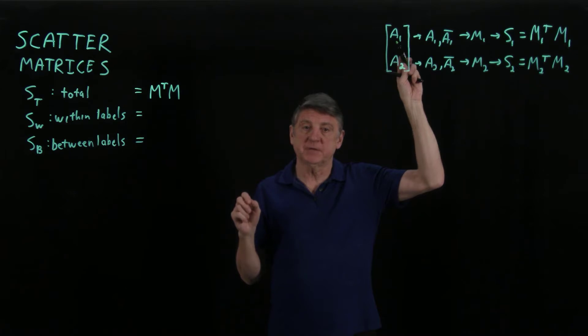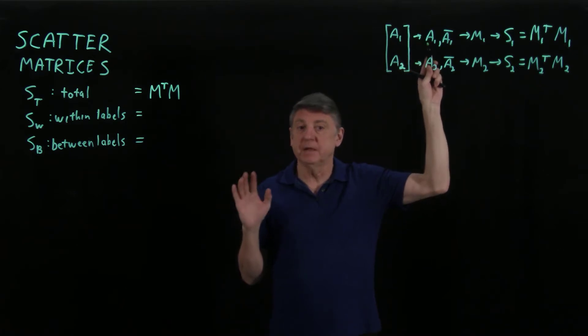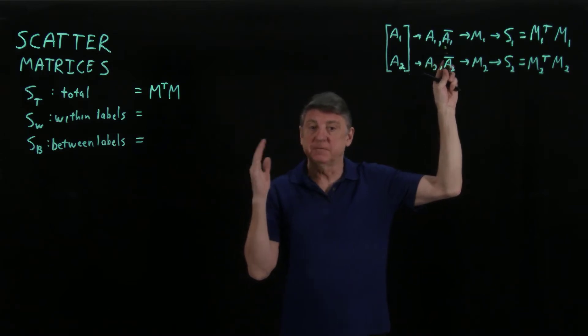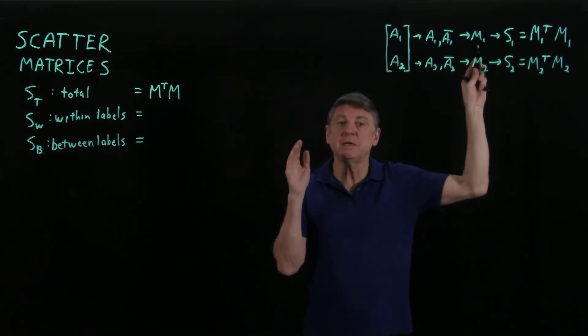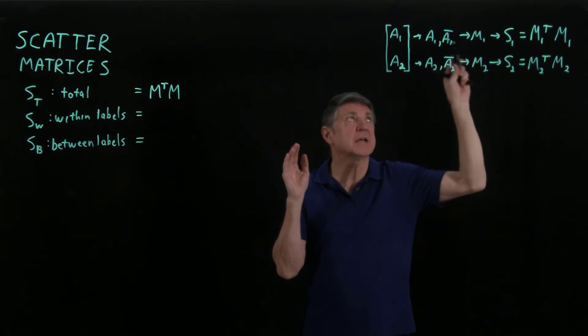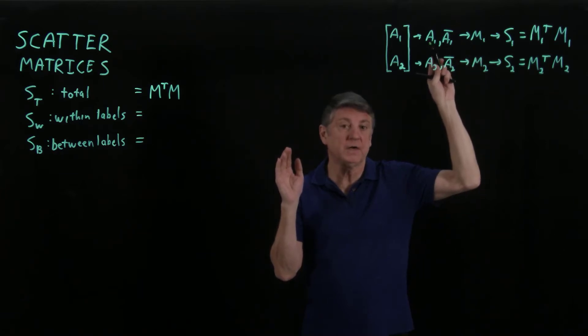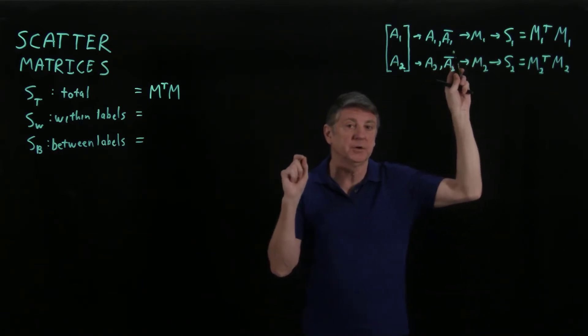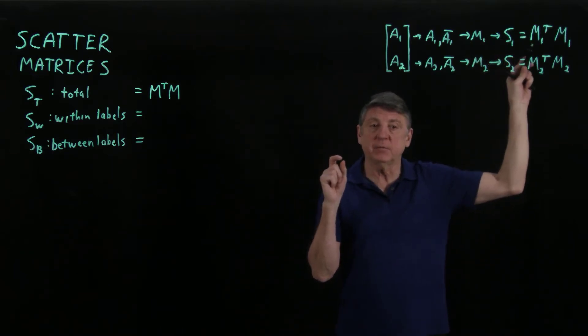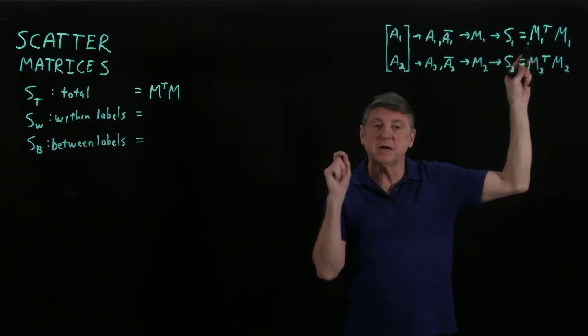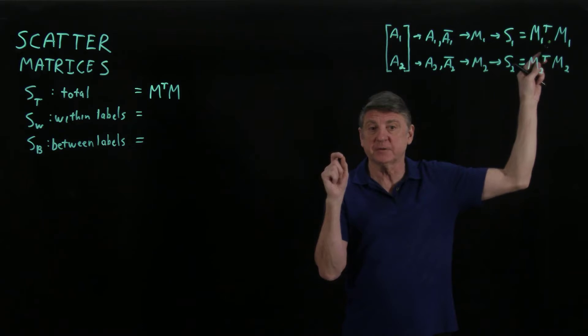This partition of the matrix will be original observations in A1, and we can find the mean of that. The mean is going to be a row-like object, and from that we can find the zero mean data matrix of those label one observations. And then we can form a scatter matrix for that label, which will be the transpose of the zero mean matrix for that label times the zero mean matrix for that label.